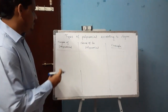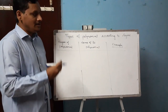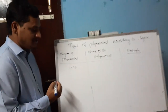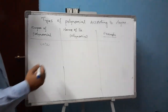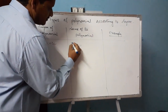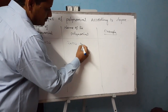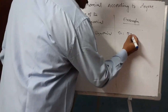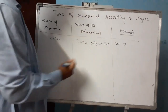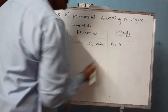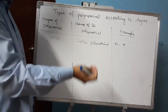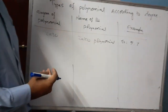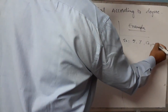We are going to discuss the types of polynomial according to degree. If the degree of the polynomial is 0, it is known as the zero polynomial. Examples: 5 is nothing but 5 times x to the power of 0, so the power of x is 0. Therefore 5, 7, 12, minus 15, etc. are all zero polynomials.